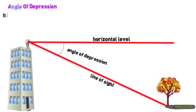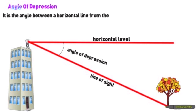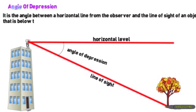The angle of depression is the angle between the horizontal line from the observer and the line of sight to an object that is below the horizontal line.